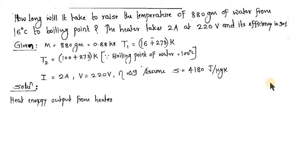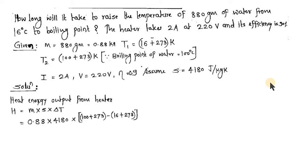As understood conceptually, heat energy output from the heater equals heat energy input to water. This is found using the sensible heat formula Q = m × s × ΔT, where m is mass, s is specific heat capacity, and ΔT is the temperature difference. Substituting the values, we get Q = 308,985.6 joules. So the heater produces heat energy equal to 308,985.6 joules.